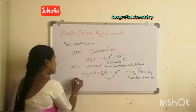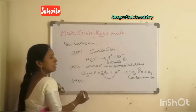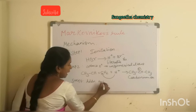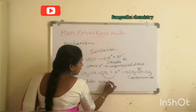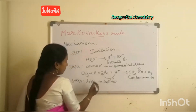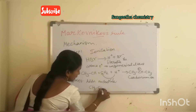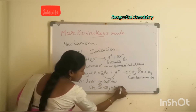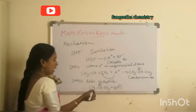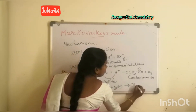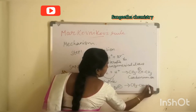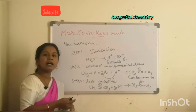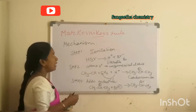Step 3 is addition of the nucleophile. CH3-CH⁺-CH3 reacts with Br⁻. The negative nucleophile attacks the positive carbon, and we get 2-bromopropane as the product. This is the mechanism of Markovnikov's Rule — the electrophilic addition reaction.